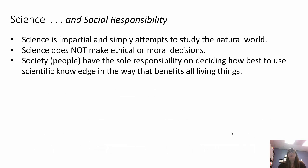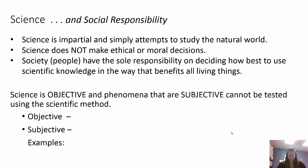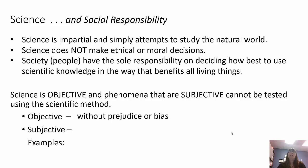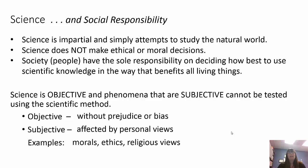Science is impartial and basically tries to study the natural world. Science does not make moral or ethical decisions — people have the sole responsibility for how to use the knowledge so that we can benefit all living things. The enemy is not science; it's the people who take that information and use it in bad ways. Science is objective, meaning there's no bias — it can be measured and is straightforward, with no prejudice. Subjective means there's prejudice or bias and your personal views come into play; you cannot test those things using the scientific method. Morals, ethics, and religious views cannot be tested.